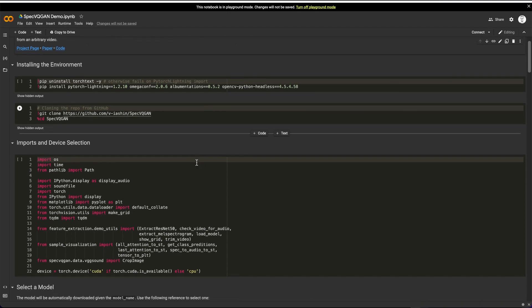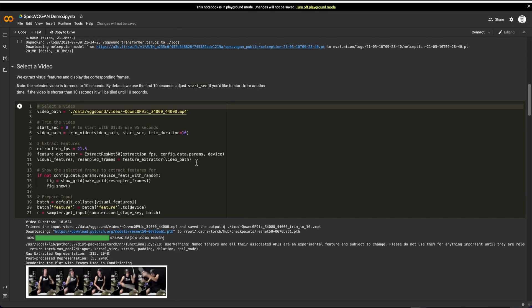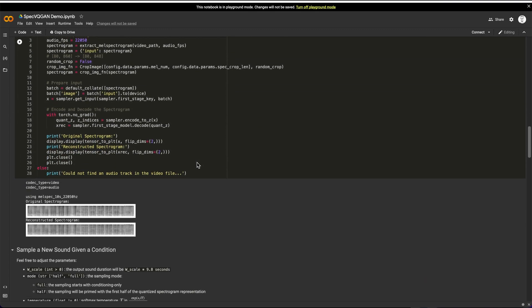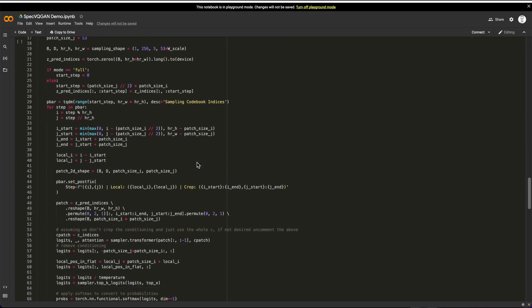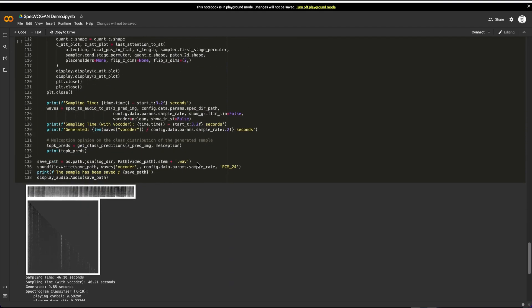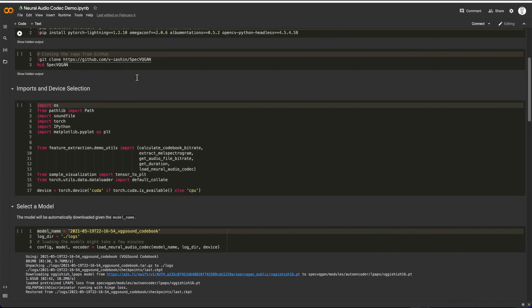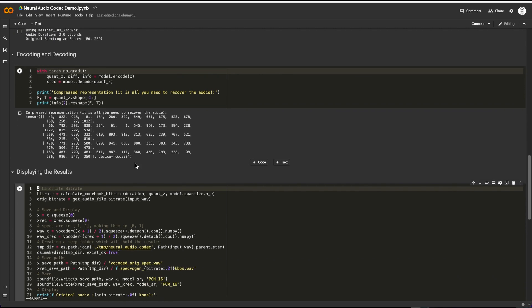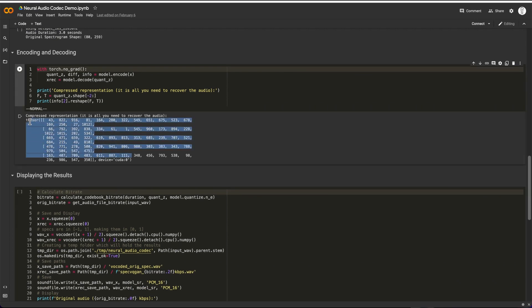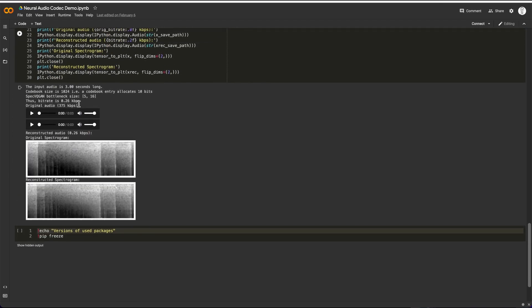We also have a Google Colab notebook which will help you to start sampling for a custom video. We invite you to try it because it's very simple. We also have a neural audio codec demo where we show how a three-second audio can be lossy compressed into just 80 10-bit integers.